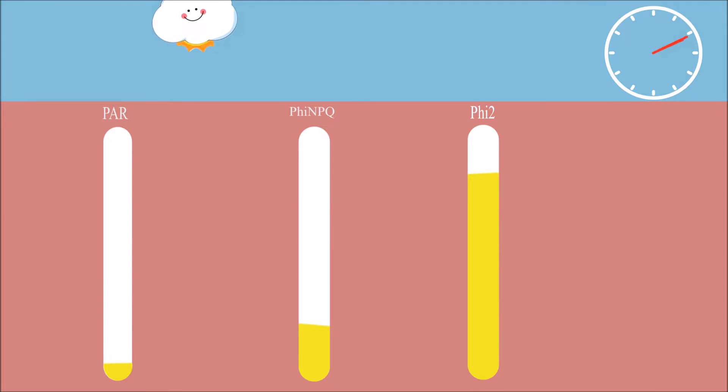Generally speaking, as incoming light, or PAR, goes up, the efficiency of Photosystem II, or PHY-II, will go down. At the same time, non-photochemical quenching, represented by the PHY-NPQ and NPQ-T parameters, will go up.